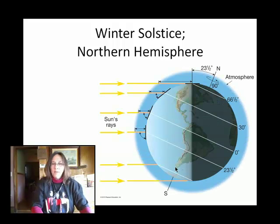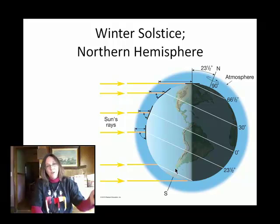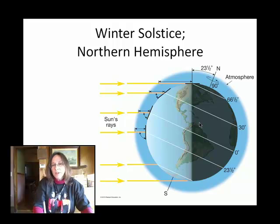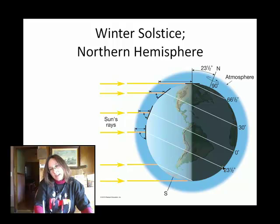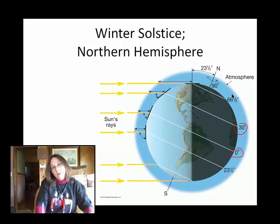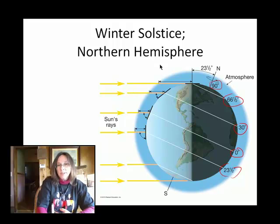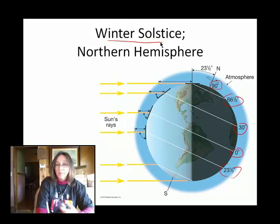Now I want to look at the earth as a whole. This diagram is showing the winter solstice — when we're experiencing winter in the northern hemisphere. You can see the lines of latitude: here's the equator, 30 degrees north latitude, 66 and a half degrees north latitude, 90 degrees north latitude. Down here we have 23 and a half degrees south latitude. And this is labeled the winter solstice, about December 21st.